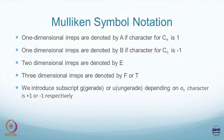For two-dimensional irreps we use the letter E, and for three-dimensional representations we call it F. For all the point groups we are studying, you do not go beyond three dimensions - they will all be up to three dimensions.